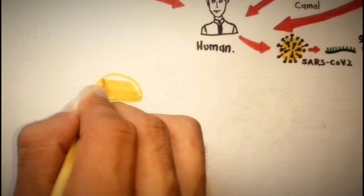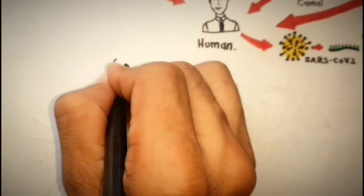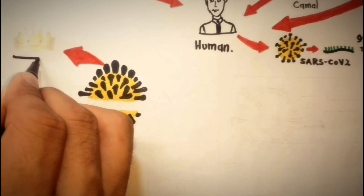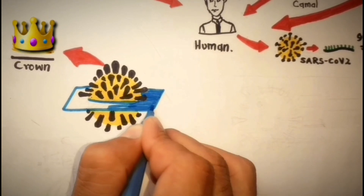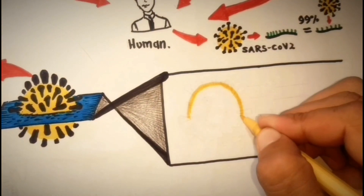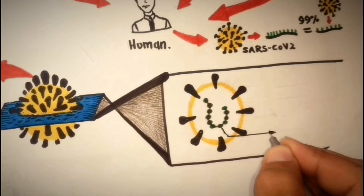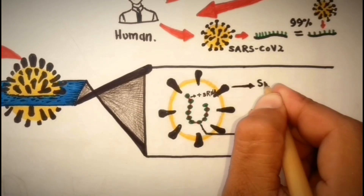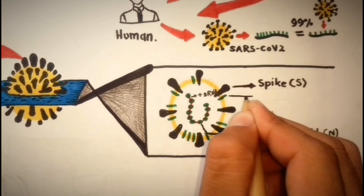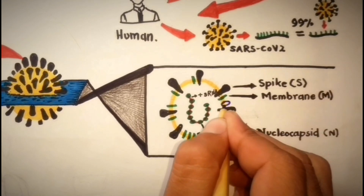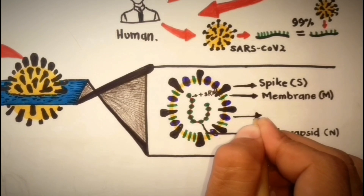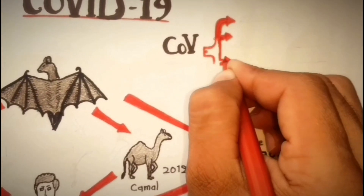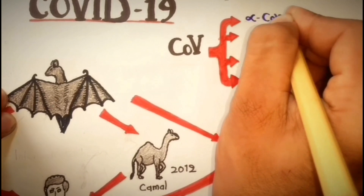SARS-CoV-2 is the largest RNA virus with a round or oval shape. Due to the presence of spike glycoproteins on the envelope, they show a crown-like appearance under an electron microscope — that's why they are named corona, derived from 'coronam', a Latin term for crown. The virus possesses a nucleic acid composed of positive-sense single-stranded RNA and nucleocapsid proteins. The nucleocapsid is buried inside a lipid bilayer and covered by spike proteins, and the membrane and envelope proteins are found among the spike proteins in the viral envelope.